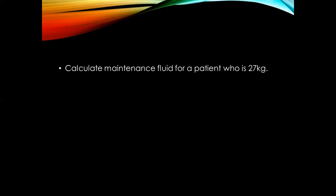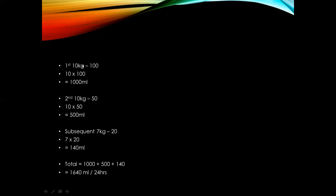For example, calculate maintenance fluid for a patient with 27 kg. For the first 10 kg, we multiply by 100: 10 times 100 gives 1000 mls. For the second 10 kg, we multiply by 50: 10 times 50 is 500 mls. Then for the subsequent 7 kg — since 10 plus 10 plus 7 equals 27 — we multiply by 20: 7 times 20 is 140 mls. So 1000 plus 500 plus 140 gives a total of 1640 mls over 24 hours.